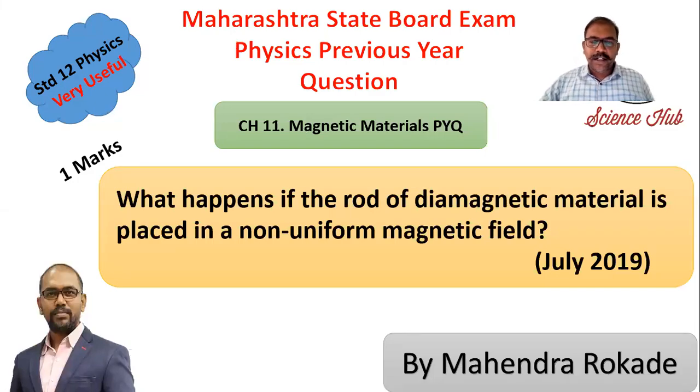This is a previous year question from magnetic materials which was asked in the board examination of July 2019 for one mark. Let's solve this question. The question is: What happens if the rod of diamagnetic material is placed in a non-uniform magnetic field?